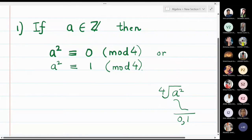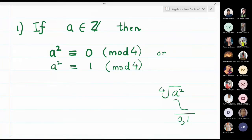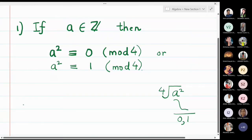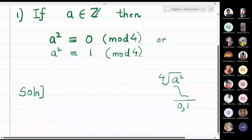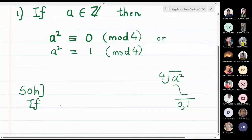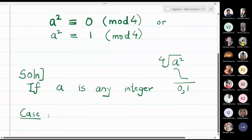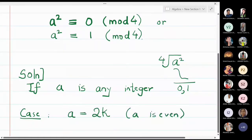So you take the square of any number and if you divide by 4 the remainder will turn out to be either 0 or 1. This is the meaning of this exercise. So let us write the solution — it's very easy. If a is any integer, then there are two cases: the number a you pick may be an even number,